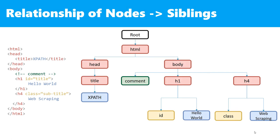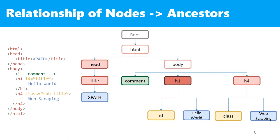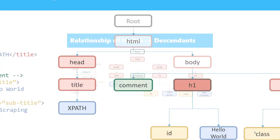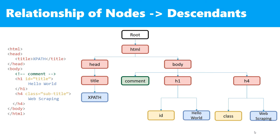Then we have siblings, which means all the nodes that have the same parent. For example, the head and the body are siblings because they share the same parent, which is the html node. Next we have ancestors, which means a node's parent, grandparents, and great-grandparents. For example, the ancestors of the h1 node are the body node, the html node, and the root node. The last relationship is called descendants, which means a node's children and children's children — it's like the inverse of the ancestors relationship.